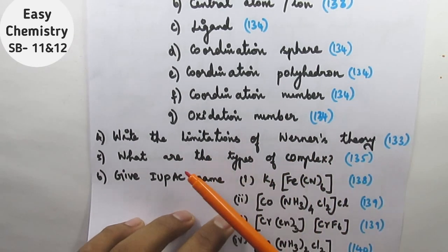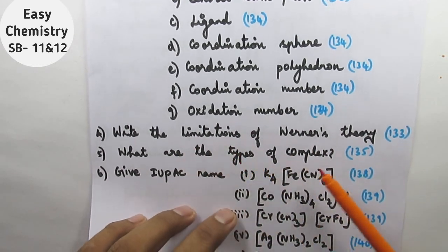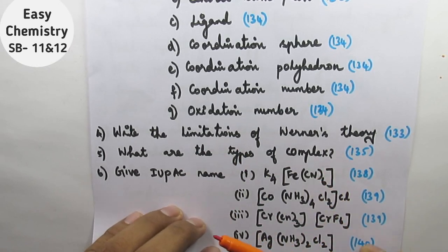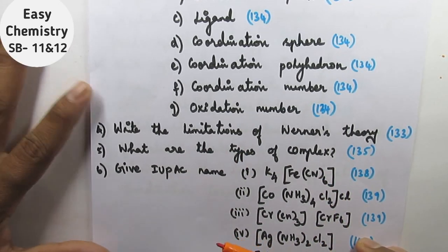Question number five: what are the types of complex? We will look at IUPAC names. Let's take a list.